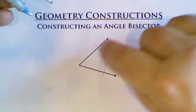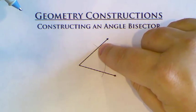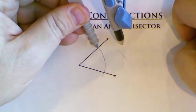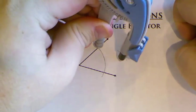Without changing the size of your compass, you're going to come to the other intersection point from our first arc. Put the point of the compass there and make an arc that intersects that first one.